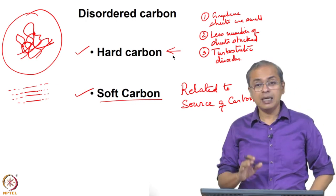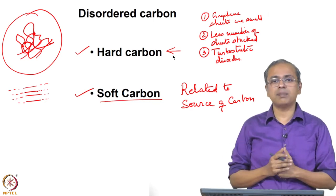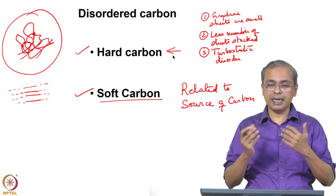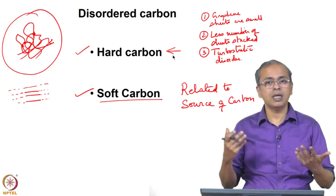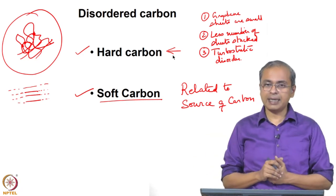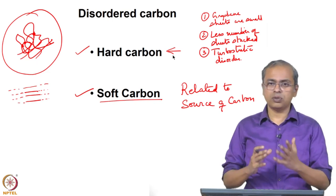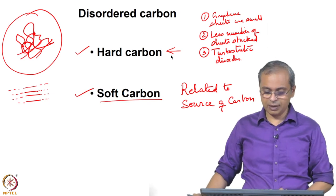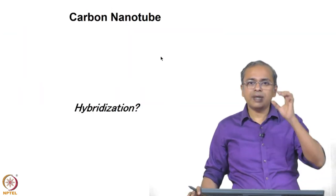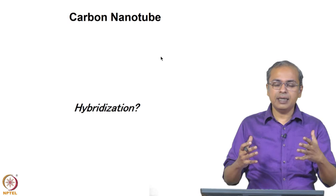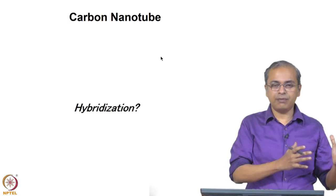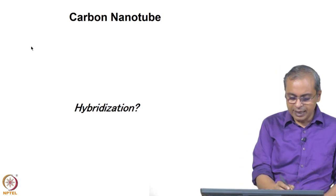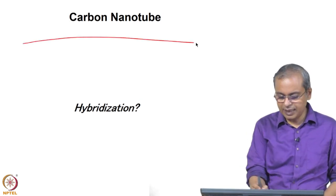Both hard carbon and soft carbon have uses — hard carbon is used in electrochemical applications, and both are being investigated for battery applications. Now we come to the carbon nanotube. We have seen the traditional structures of graphite and diamond, and now we look at a carbon nanotube, which is basically a tube, as the name describes.